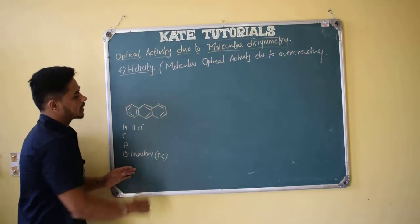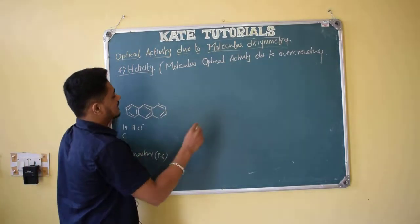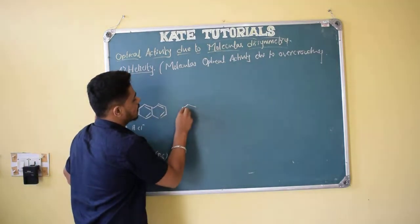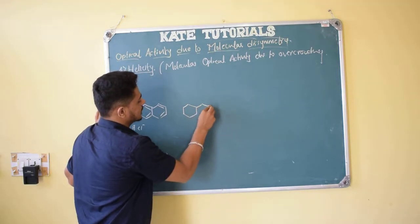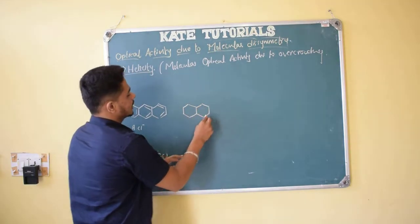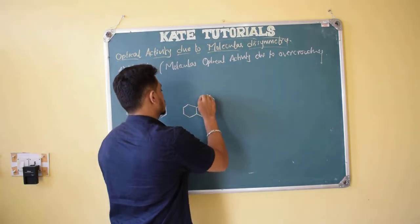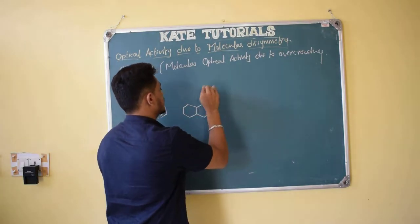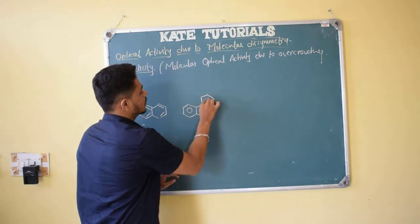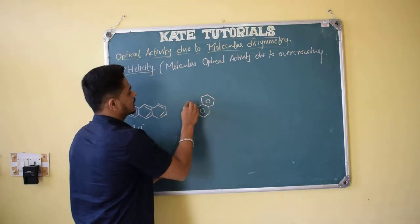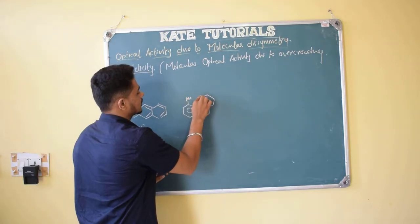Because of the plane of symmetry, anthracene is optically inactive. There is one more molecule called phenanthrene. Its structure is similar to anthracene but differs at one position. Phenanthrene is also a planar molecule, but if we substitute methyl groups — one methyl here and another methyl here — something interesting happens.